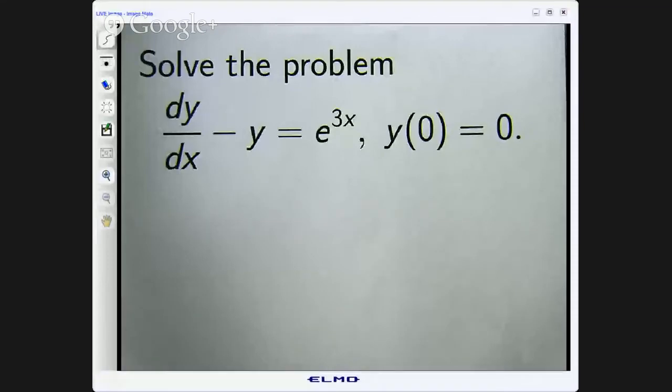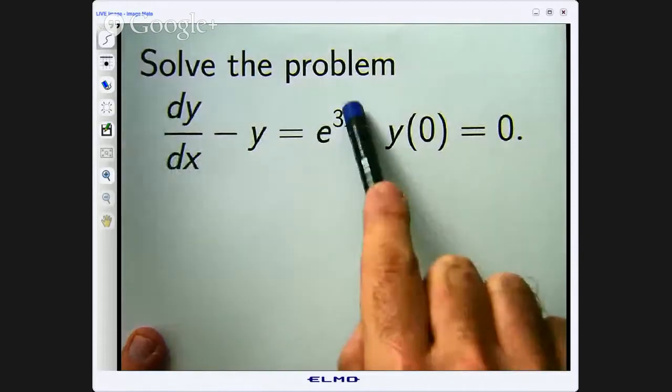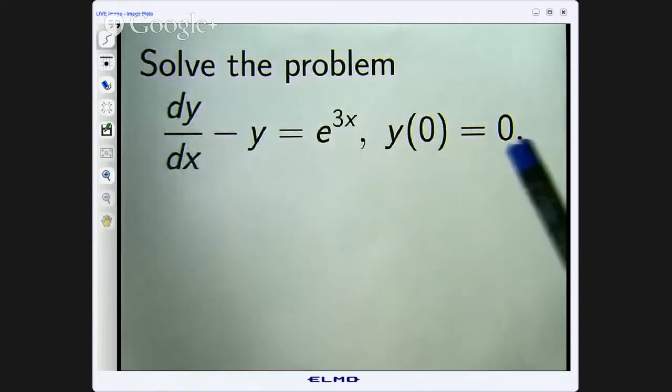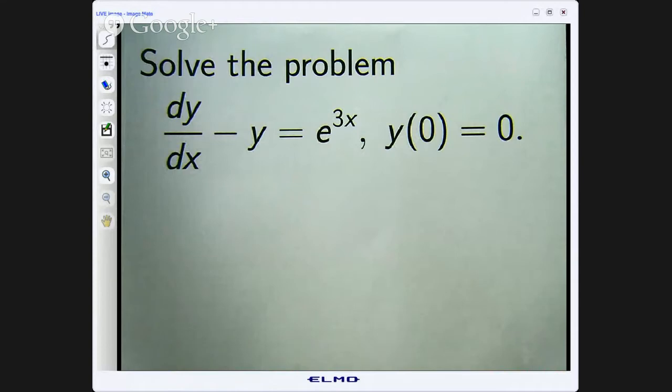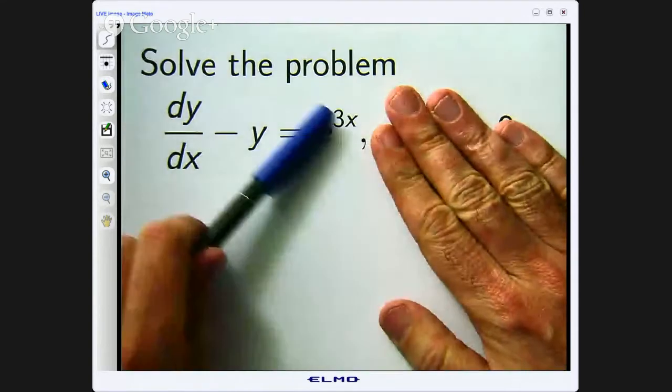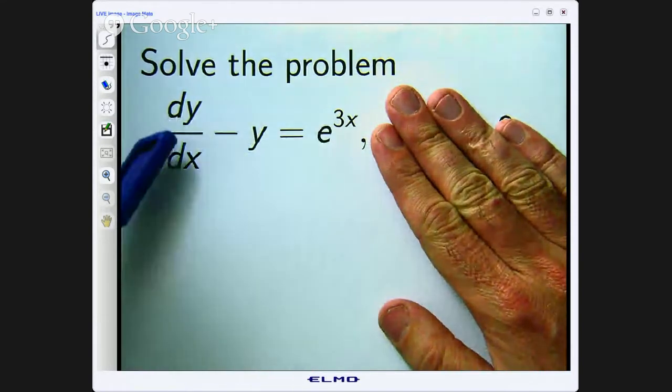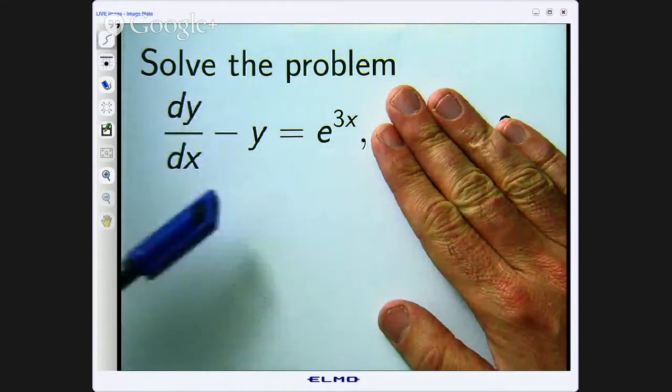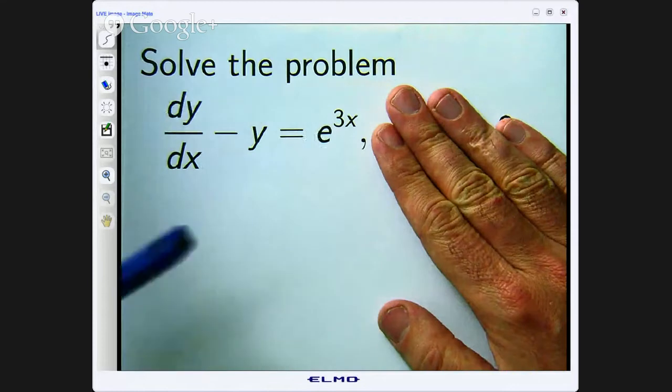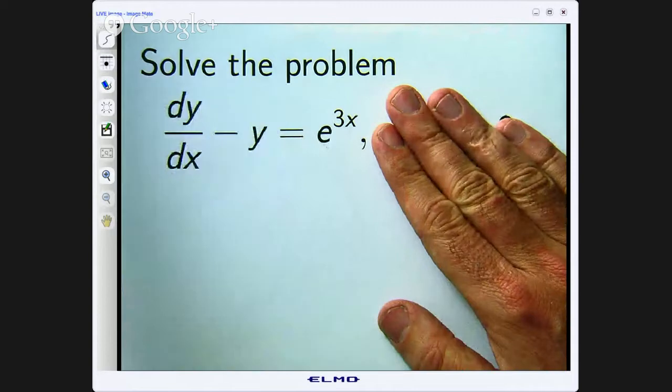Alright so here we are given an equation called a differential equation. It is a linear differential equation. We are also given a bit of extra information called an initial condition. Now with the differential equation what we are trying to do is solve the equation for the unknown function y whose derivative minus itself equals e to the 3x. So we want to find a function y and we take that function away from its derivative we are left with e to the 3x.